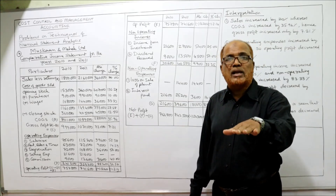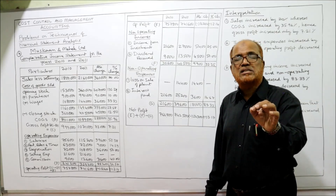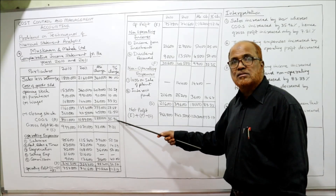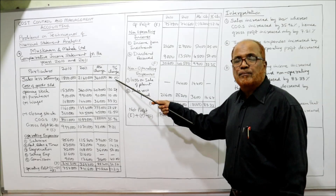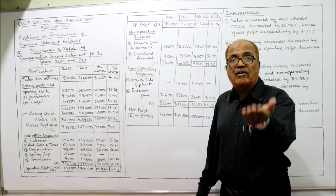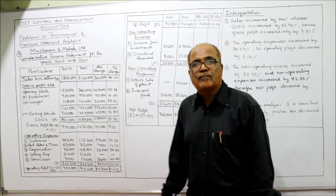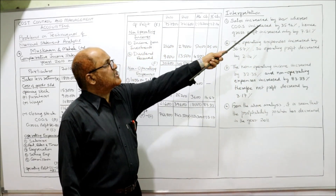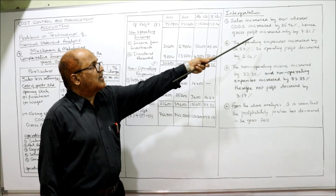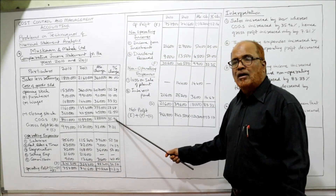The gross profit rate is low because the cost of goods sold is increasing at a very high rate of 35.96%. Sales are increasing by only 20%, but COGS is increasing by 35.96%. Due to this heavy increase in cost, profitability is coming down. First interpretation: sales increased by 20% whereas COGS increased by 35.96%, hence gross profit increased only by 7.21%.